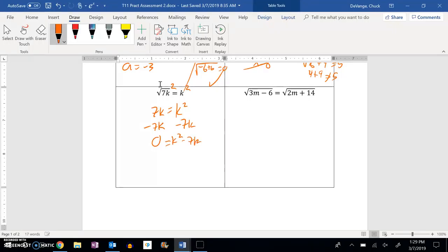So from here I can factor out a k. And notice I get k times k minus 7. Distribute that back in. k squared minus 7k equals 0. So k equals 0 or 7.